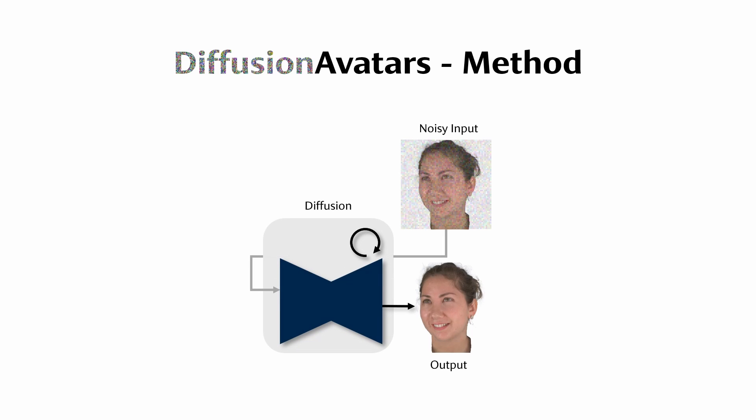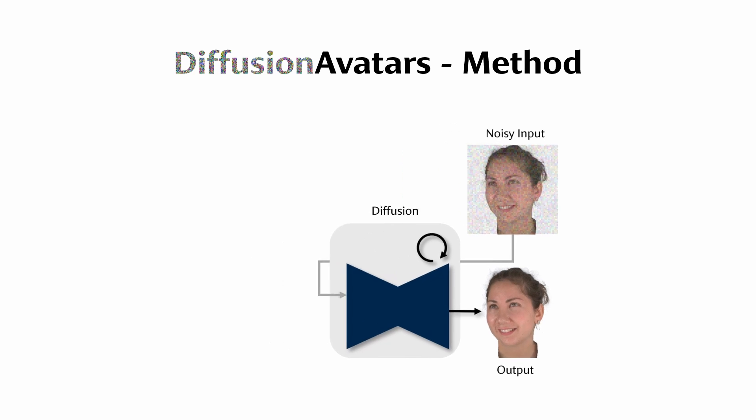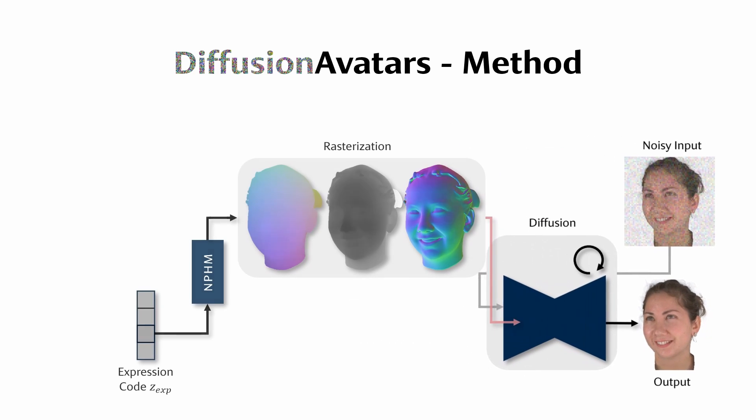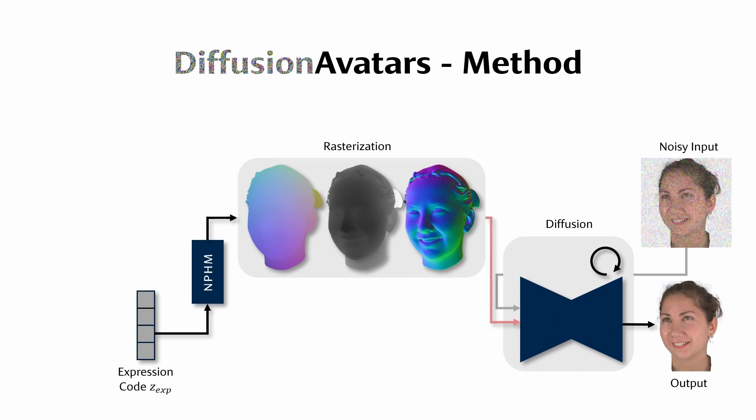Our goal is to build a diffusion-based neural renderer that can generate high-quality images of human heads. To enable control over expression and viewpoint, we condition the diffusion model on rasterized NPHM meshes. We provide the coordinates in NPHM's canonical space, render depth, and normals as input.